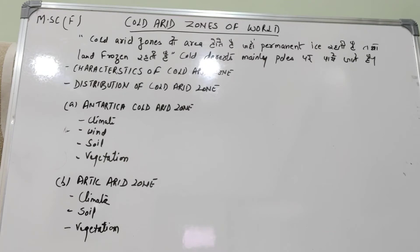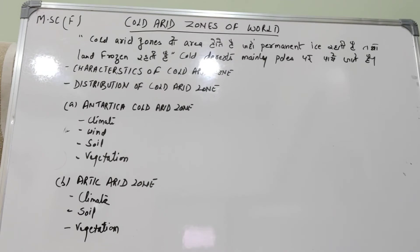यह सारा कुछ characters of the cold arid zone है। यहाँ जो vegetation होती है वो बहुत scattered होती है — mosses, lichens, ferns, grasses पाई जाती हैं। Warmest month में temperature maximum 10 degree centigrade होता है। Top soil 9 माह तक जमी रहती है, जबकि sub soil हमेशा जमी रहती है। Soil moisture frozen हो जाने के कारण physiological drought की भी संभावना रहती है।